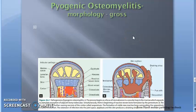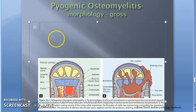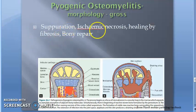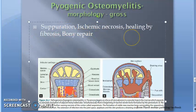We want to look at the morphology for pyogenic osteomyelitis in this video. Depending on the duration, it could be acute, subacute, or chronic osteomyelitis. The pathologic changes in any stage are going to be suppuration, ischemic necrosis, healing by fibrosis, and bony repair. Let's look at the spelling: ischemic necrosis.